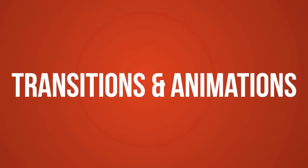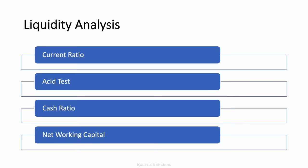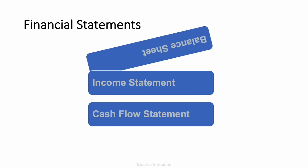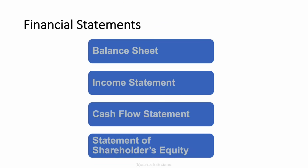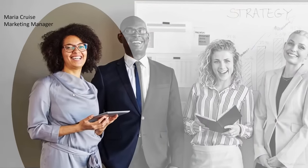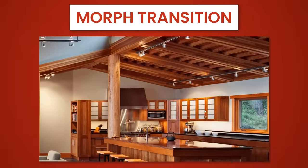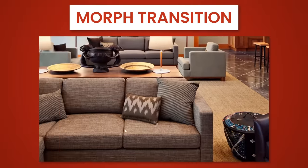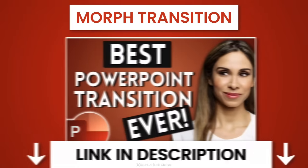Mistake number four is to use distracting transitions and animations. Transitions and animations can be great tools to emphasize certain points, but most of the standard effects in PowerPoint are too distracting and can come across as childish in business settings. Applied with intent and in moderation they can be quite effective. One of my favorite transitions is called Morph — you can create super smooth, professional effects in seconds that look like you spent hours creating them.